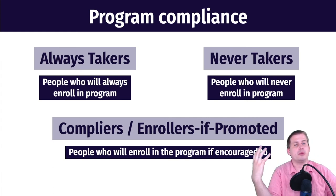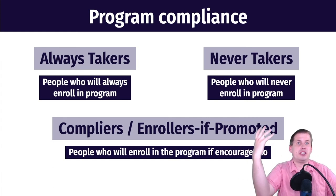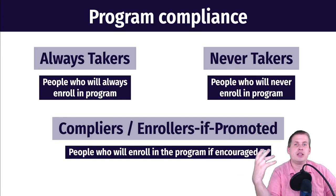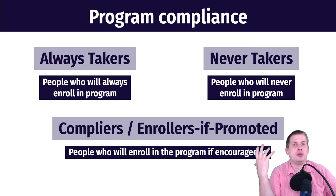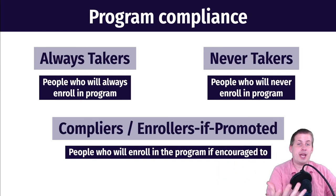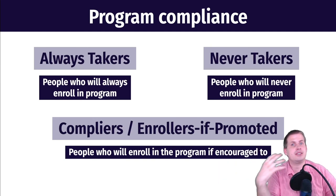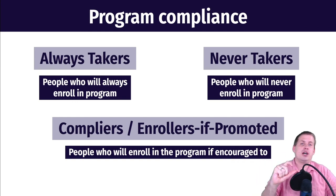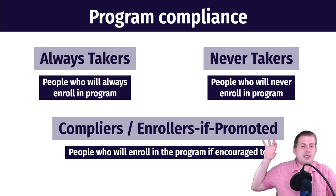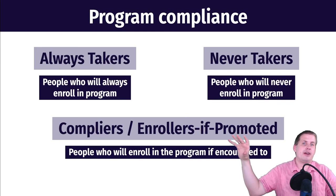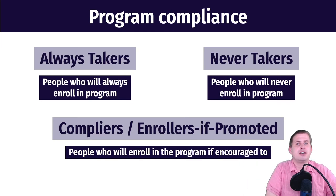We won't be able to find a population-level treatment effect because it's not a full randomized controlled trial — we're not telling people they absolutely must or must not register, because that's unethical. We're encouraging people. So what we get is the complier average causal effect, which we find through instrumental variables.